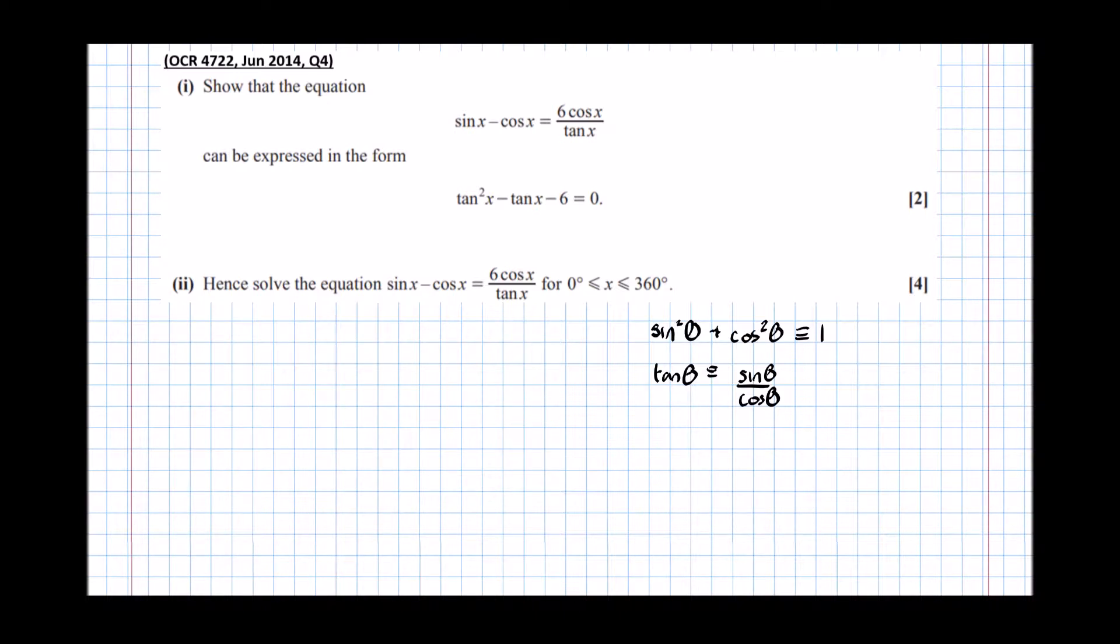Now, as a bit of a clue, because the function involves tan, tan squared x minus tan x minus 6, it's a safe bet that we're going to somehow have to use this trigonometric identity involving tan.